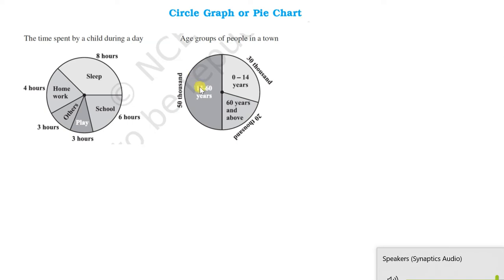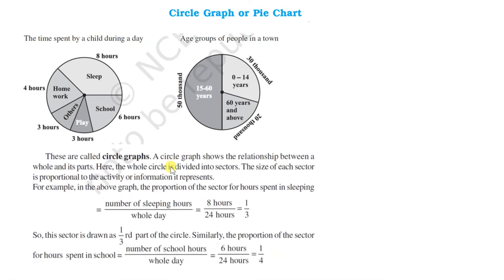This is again showing a part of the whole population of a town. We can see that these are circle graphs. The circle graphs show the relationship between the whole and its parts. This is called a pie chart or you can say a circle graph.